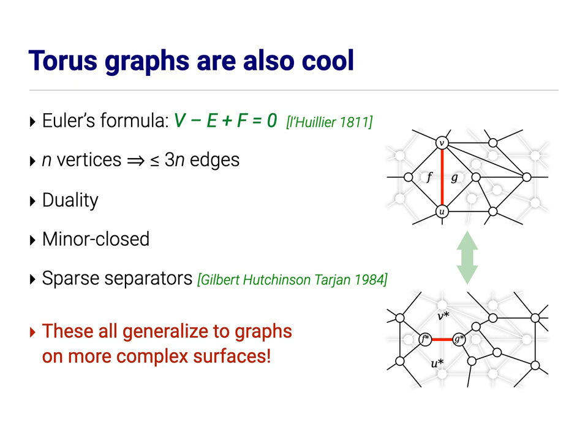These graphs are also cool. They also obey a variant of Euler's formula where now instead of getting V minus E plus F equals two, you get V minus E plus F equals zero. Toroidal graphs are still sparse. When you have N vertices, they have at most three N edges. You still have duality because everything locally looks like it's in the plane. That's how surfaces behave and duality is defined entirely locally. Torus graphs are still minor closed. Deleting and contracting edges still leaves a torus graph. And they still have sparse separators with different constants, but slightly more complicated algorithms. But still, you can delete about square root of N vertices and cut the graph into constant fraction sized pieces.